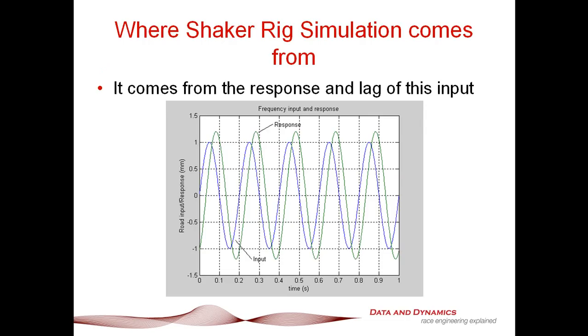Where shaker rig simulation comes from is we're putting in a frequency-based input into it. For example, we're subjecting this blue trace to a sinusoidal input, and the response is this green line, which is our output response. A couple of things to note. Typically, the output response, particularly below resonant frequency and in the area around the resonant frequency, the response will be greater than the input. But you'll also notice here that there's a lag there, and that's actually really important to note. It's that combination that really gives you a good feel for what's actually going on. That's pretty much what's happening underneath the hood.